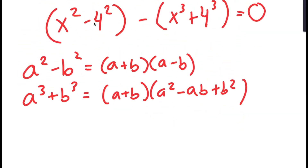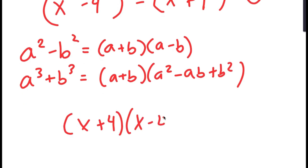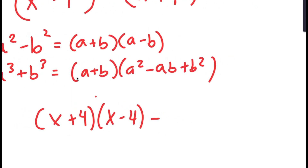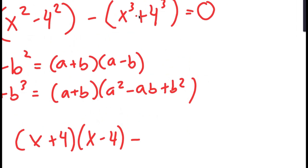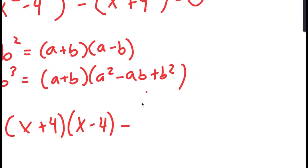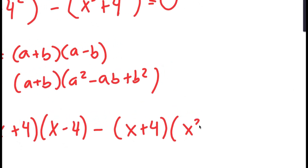So for x squared minus 4 squared, it's going to turn into x plus 4 times x minus 4. And for x to the power of 3 plus 4 to the power of 3, it's going to turn into x plus 4 times x squared minus 4x plus 16.